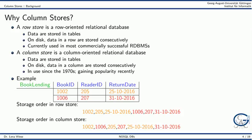In contrast, in a column store, on disk data in a column are stored consecutively. In our example, first the entire book ID column is stored, next the entire column reader ID, and lastly the entire column return date.